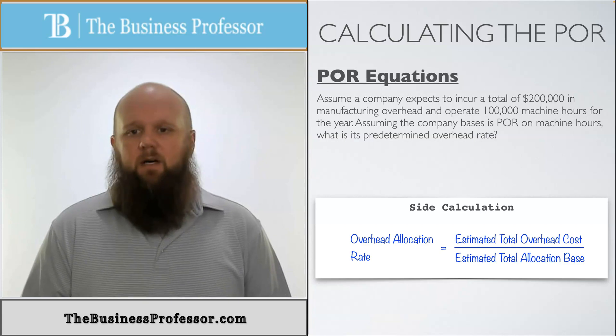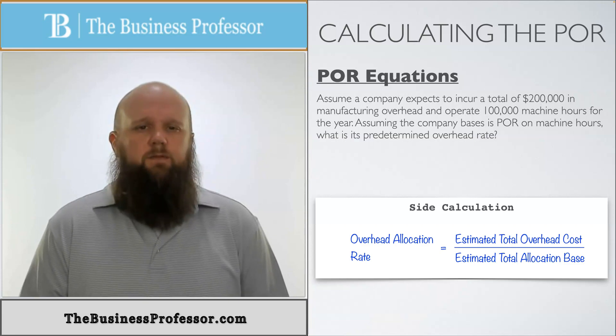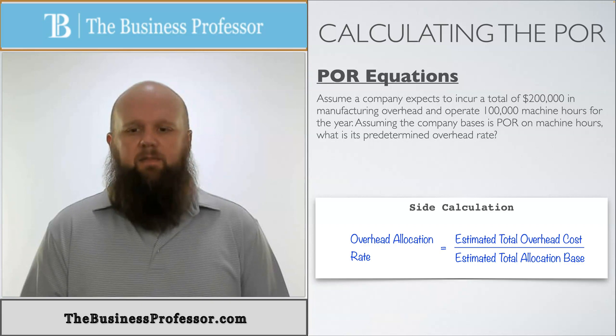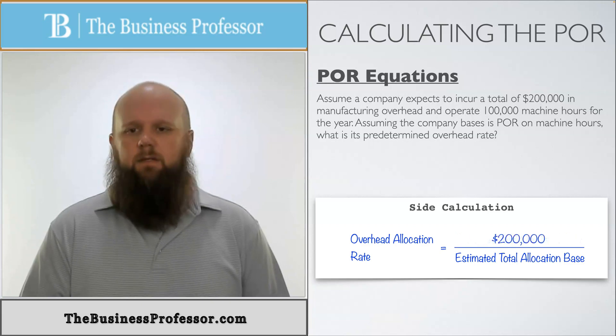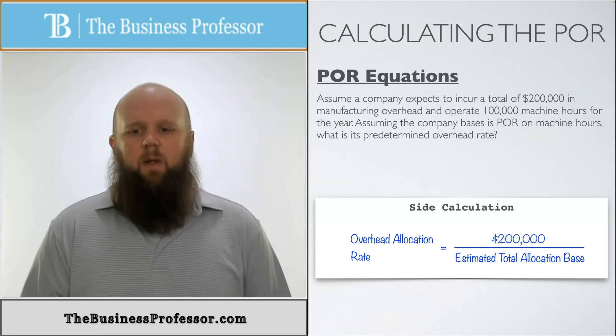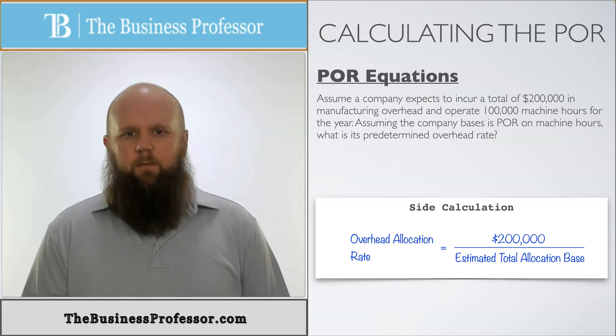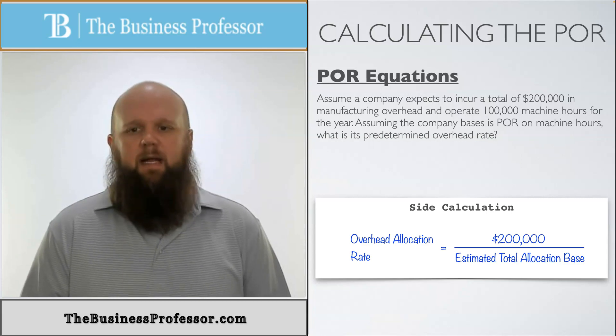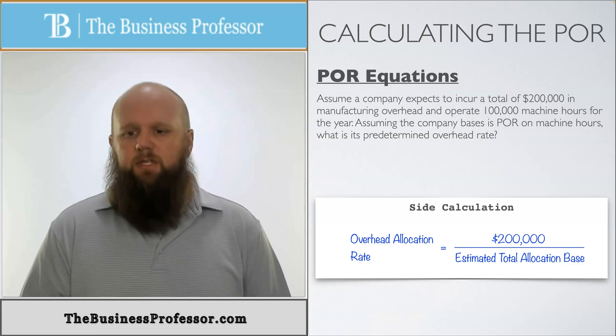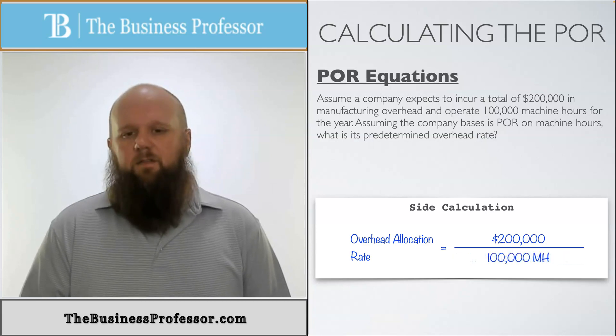Our estimated total overhead, it tells us they expect to incur a total of $200,000 for the entire year in manufacturing overhead. So let's put that in there, $200,000. Our estimated total allocation base, well, it tells us that we're going to base this off of machine hours, and they expect total machine hours for the year to be 100,000 machine hours. So let's put that in there. Divide that out.